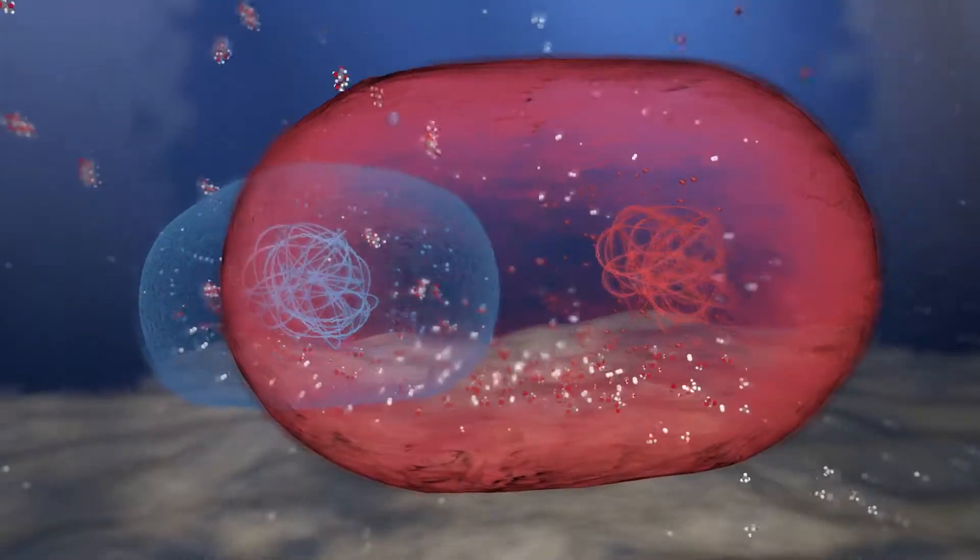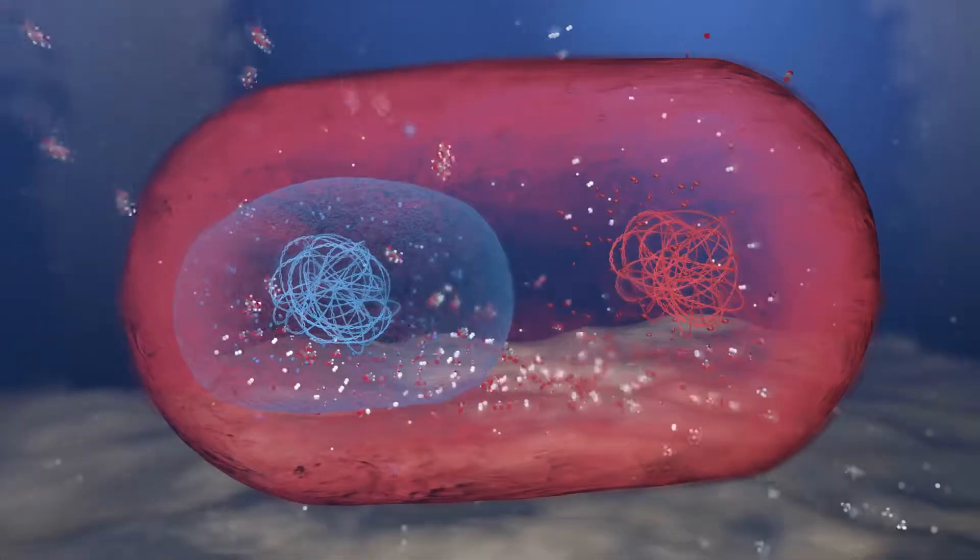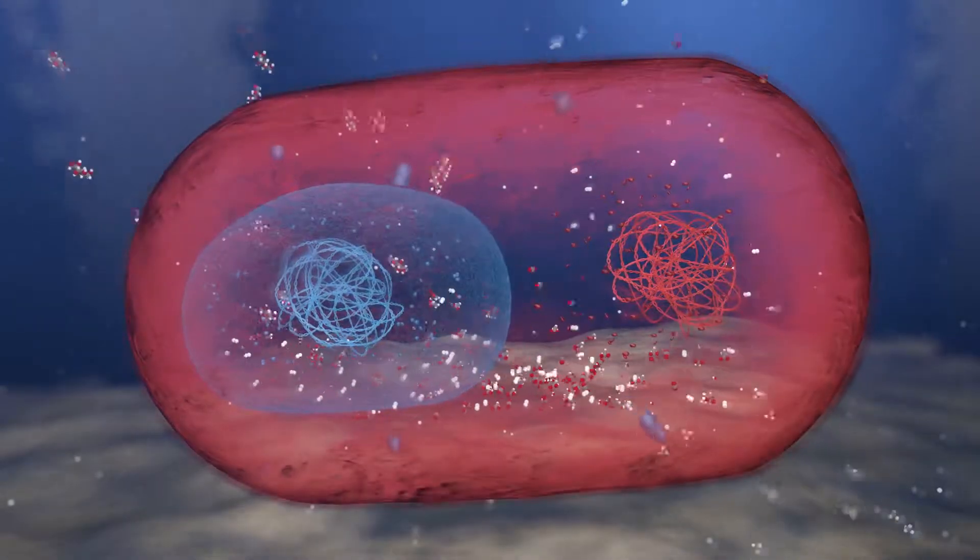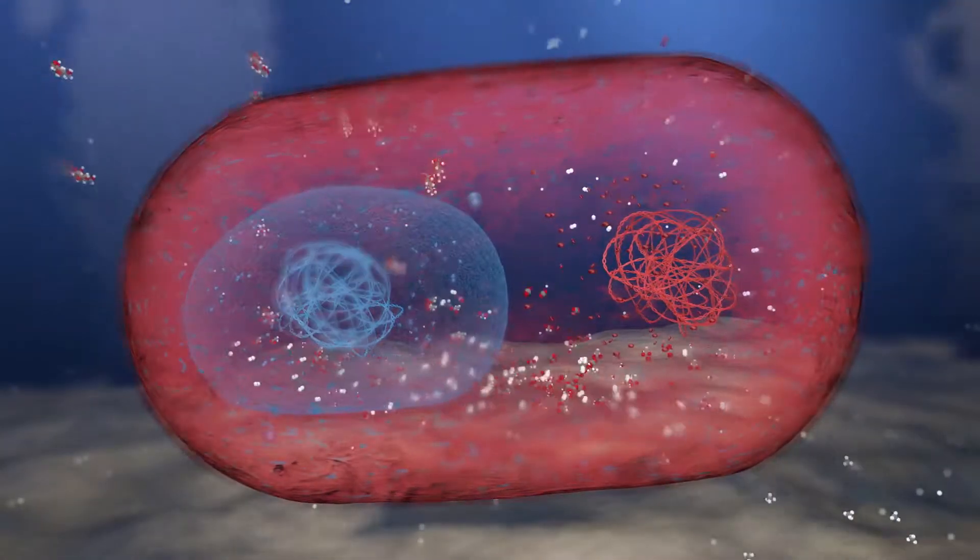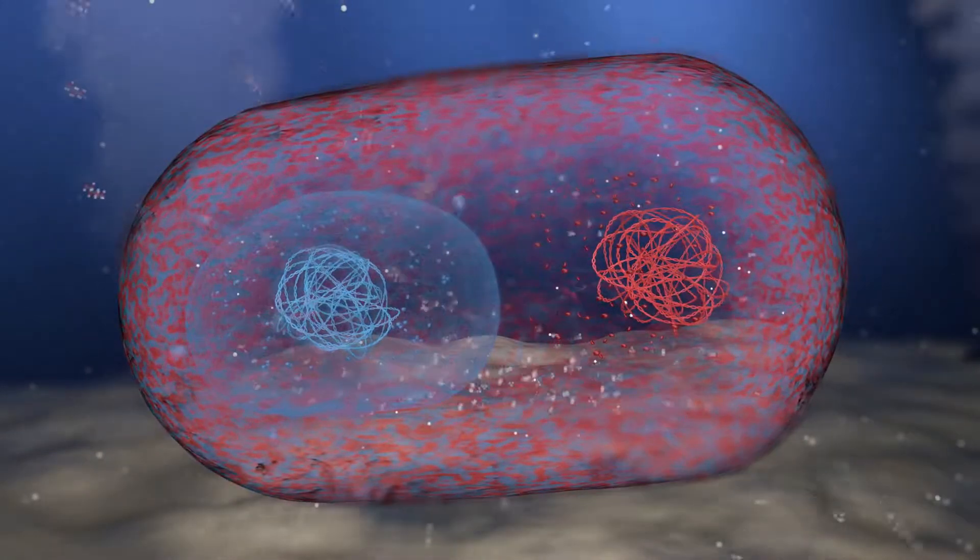Note the outer membrane vesicles, small blue spheres, being produced by the mitochondrial ancestor. When it becomes an endosymbiont within the archaeal host, vesicles of bacterial lipids fuse with the host's plasma membrane, giving it a mixed lipid composition.